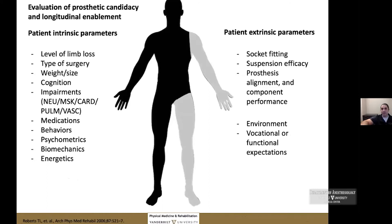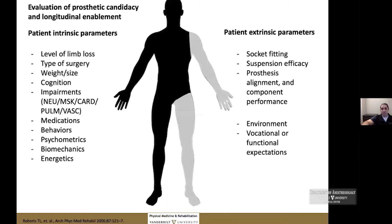Professionally, I do the evaluation for prosthetic candidacy after acquired or congenital limb loss, and longitudinal enablement — seeing patients several times per year, taking stock of their level of limb loss, the type of surgery, weight, size, cognitive status, impairments from comorbidities, neurological burden, musculoskeletal, cardiovascular, pulmonary, and vascular issues. I also consider medications and how they affect walking function, alertness, fall risk, and physiologic reserve, along with psychometric considerations, biomechanics, and energetics — before even looking at the device itself.